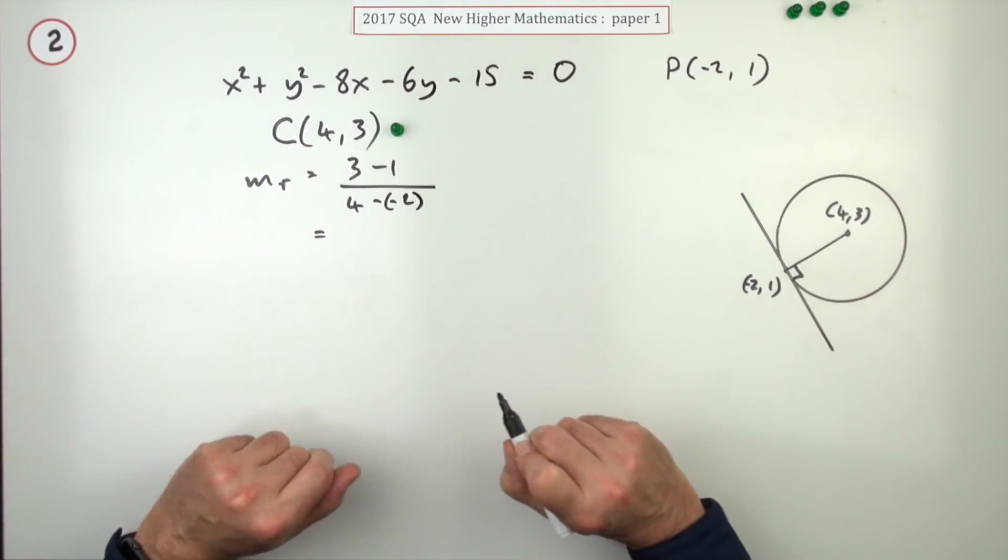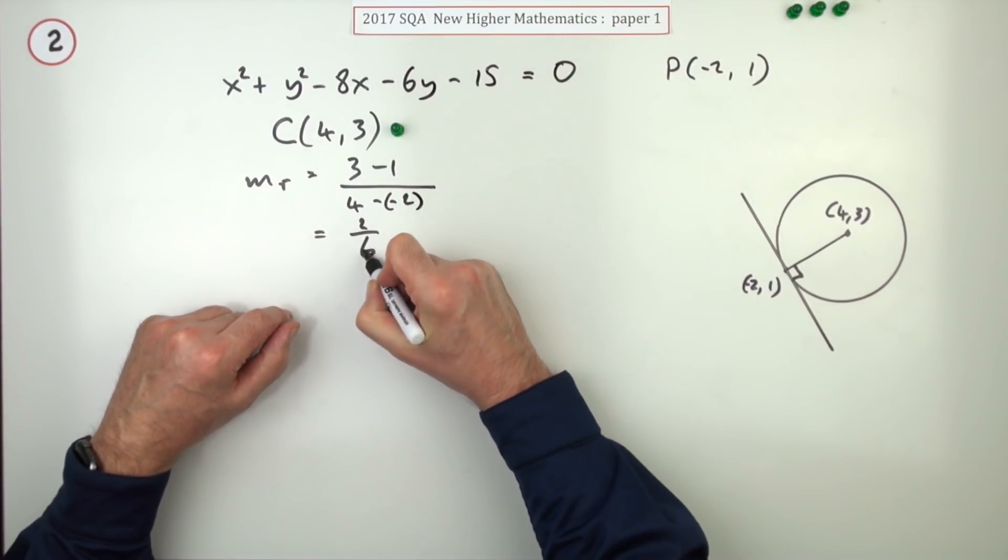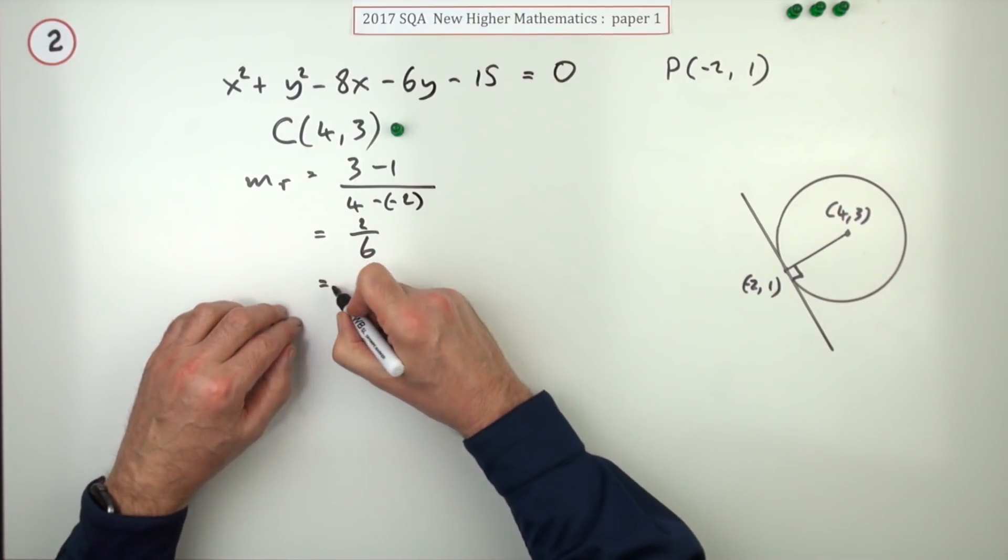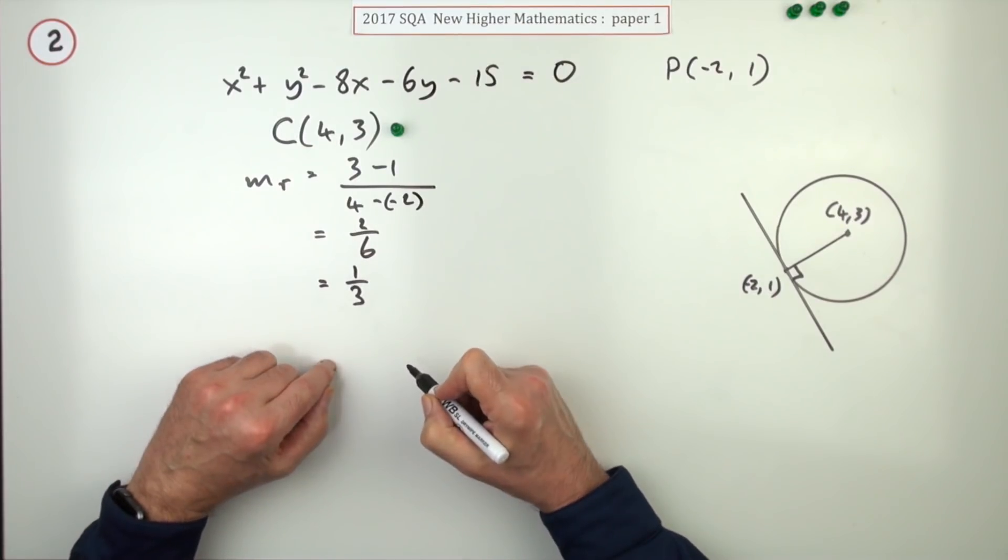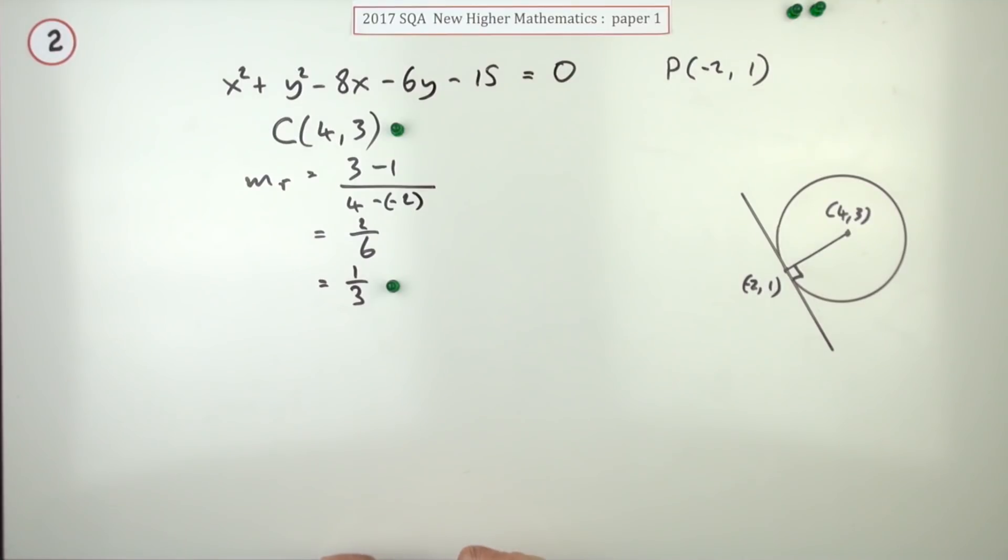I was going to jump straight in with plus 2, doesn't matter. So that's 2 upon 6, which of course you should simplify to 1 upon 3. Doing that gets the next mark.